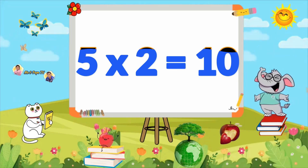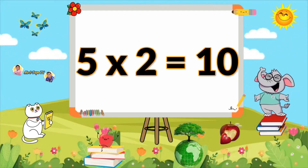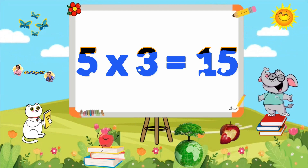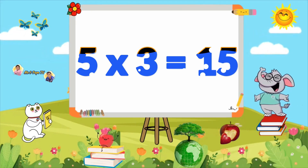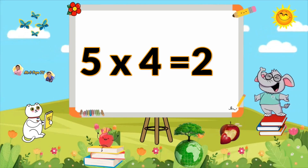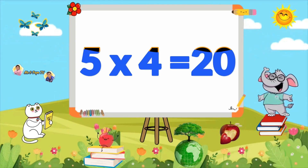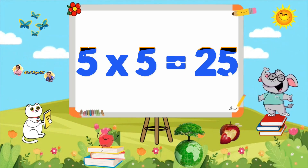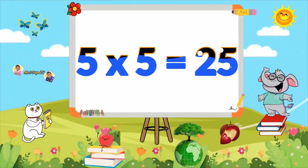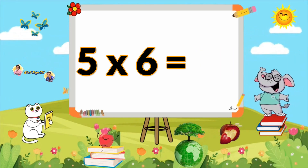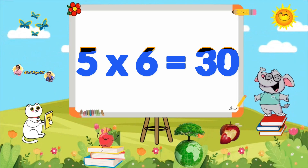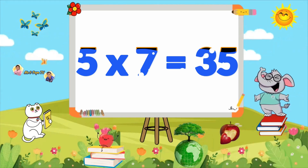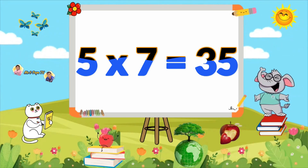Learn Table of 5. 5 ones are 5, 5 twos are 10, 5 threes are 15, 5 fours are 20, 5 fives are 25, 5×6=30, 5×7=35.